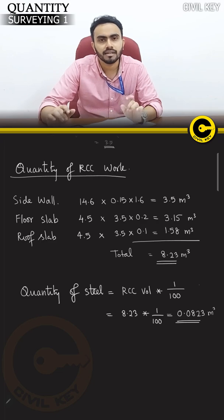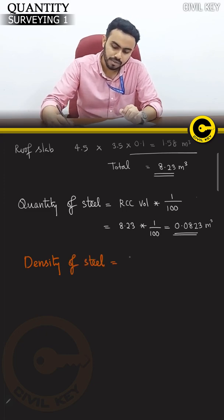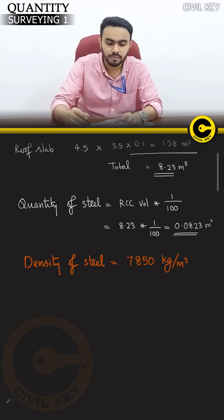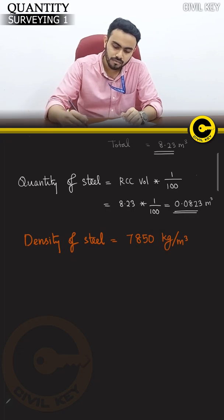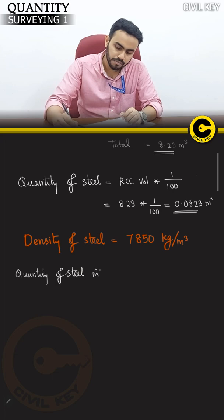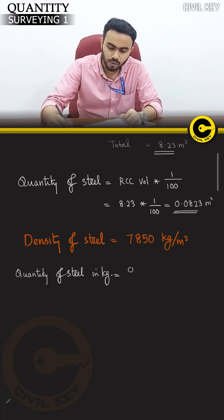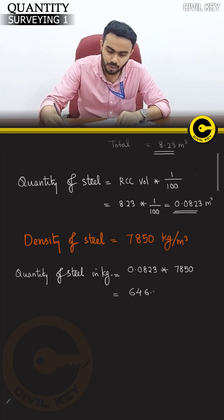The density of steel is equal to 7,850 kg per m³. That means 1m³ of steel weighs 7,850 kg. Now let's multiply to get the total quantity of steel in kg. The total volume is 0.0823m³ multiplied by 7,850, which gives 646.4 kg.